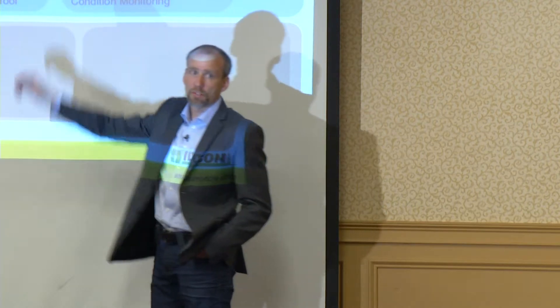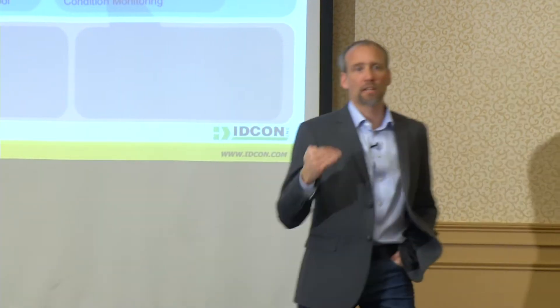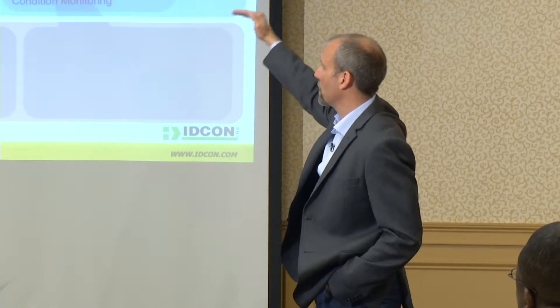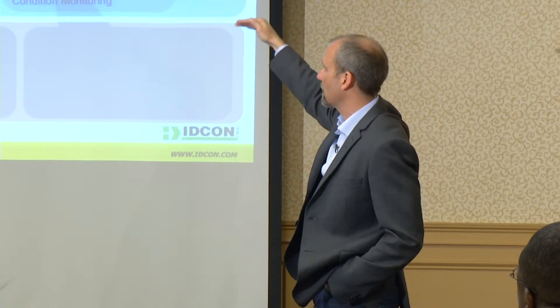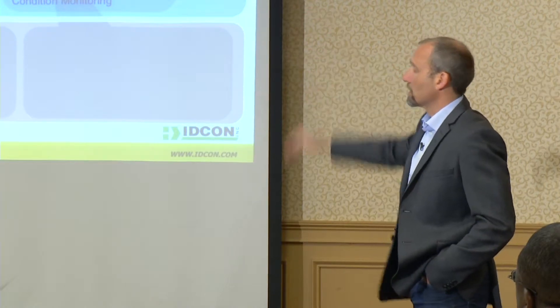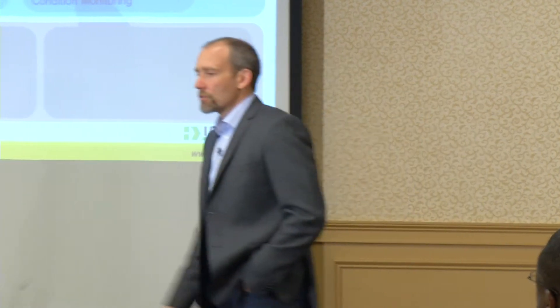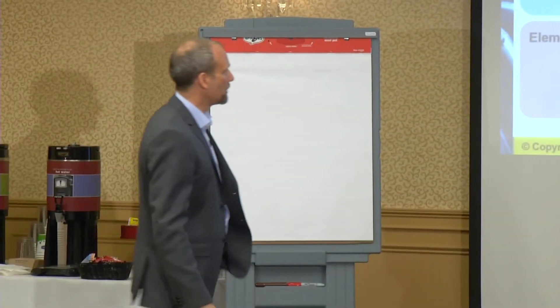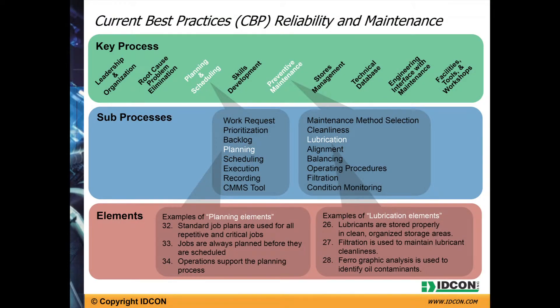In planning and scheduling and preventive maintenance we have a few details. We break planning and scheduling into key processes: work request, prioritization, backlog, planning, scheduling, execution, etc. We break preventive maintenance into some areas as well. Once you have the areas, you can say okay, what are the right things to do? Let me give some examples — we have about two hundred and forty elements.